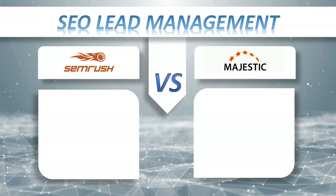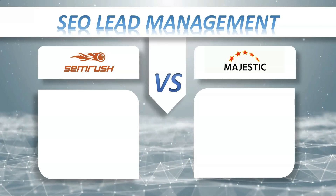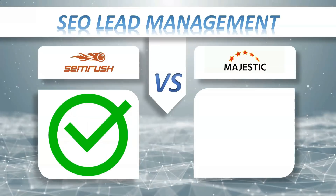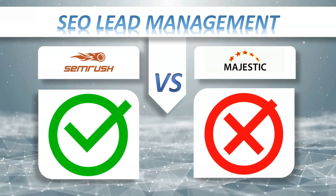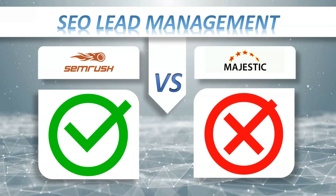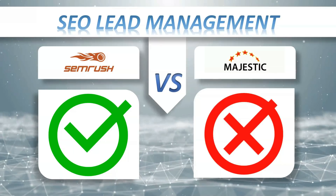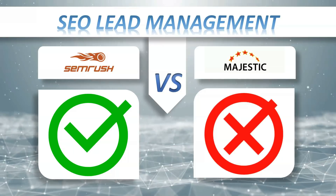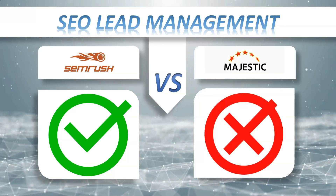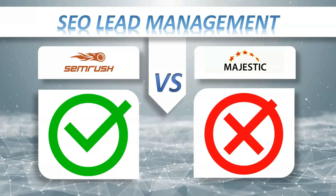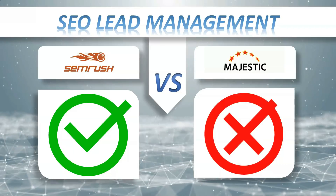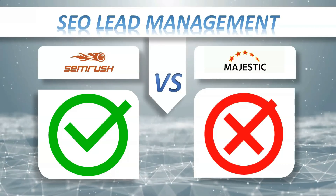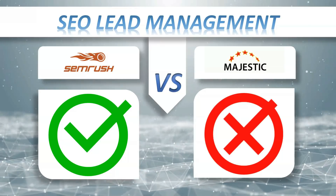Lead management: SEMrush has it, Majestic doesn't have it. The lead generation tool gives you a custom widget to place on your website that collects email addresses from website visitors in exchange for a sample website audit. With this tool you'll be able to passively gather business leads for your online agency or service.